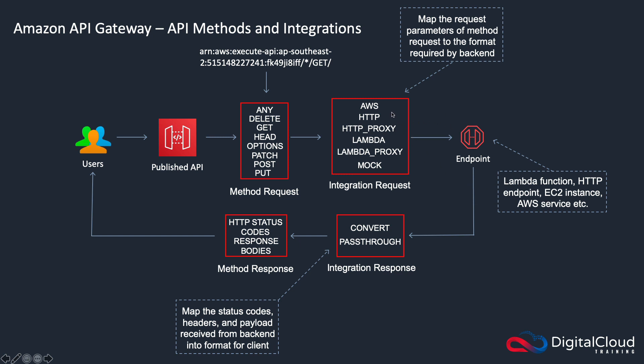There are a few different types of integration requests such as AWS, HTTP, HTTP proxy, Lambda, Lambda proxy, and mock, which we used in the last lesson. After the data is then processed and returned, it then goes through the integration response.